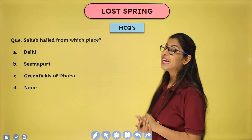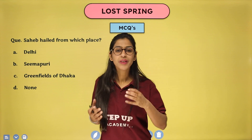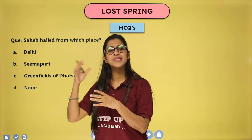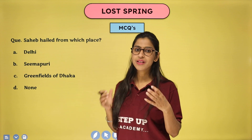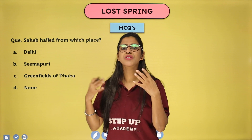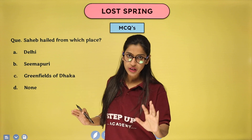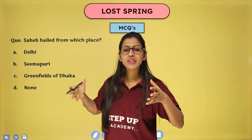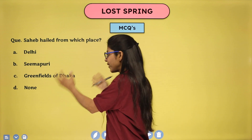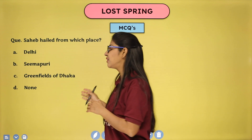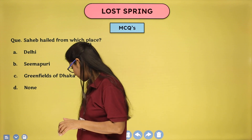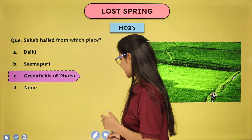Sahib hailed from which place? These people migrated — they originally lived in the green fields of Dhaka. That was their place of belonging, their original place. Currently they are living on the outskirts of New Delhi in Seemapuri, but they originally came from Dhaka. That is the correct answer.